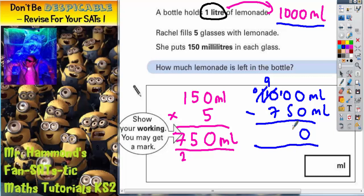So ten take away five is five. Nine take away seven is two. And we've got nothing left here. So that's our final answer: 250 milliliters. So that's the answer you need to put in the answer box.